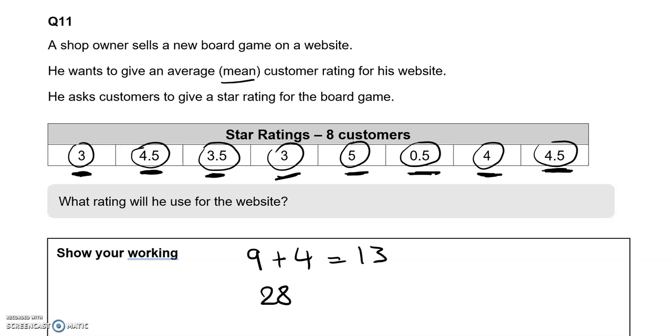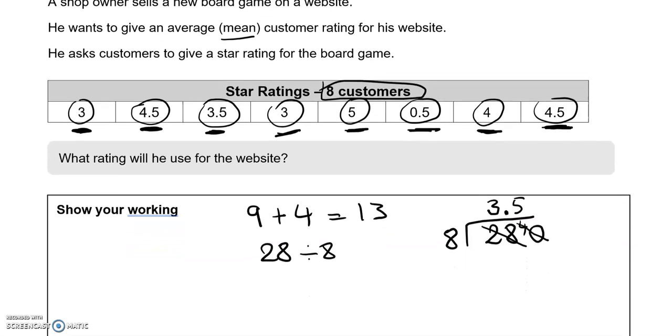How many ratings are there all together? That's 8. So we're going to divide this by 8. How many 8s will fit into 28? That's going to be 3, because 3 times 8 is 24. And we've got 4 left. Now we've run out of digits, so we're going to put a decimal point in here. And we can add a 0. How many 8s into 40? That's exactly 5. So 3.5 should be the rating that he puts on the website.